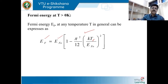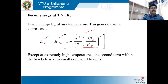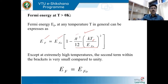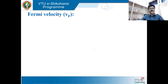EF does depend on temperature through this factor. However, the value of (π²/12) × (kT/EF0)² is a very, very small quantity, and since it is negligible, the whole second term within the bracket can be neglected — except at extremely high temperatures. Therefore, at normal temperatures, EF ≈ EF0, which means the Fermi energy is independent of temperature. It may change only at very high temperatures, but at normal temperatures the Fermi energy does not change. We conclude that Fermi energy is independent of temperature.